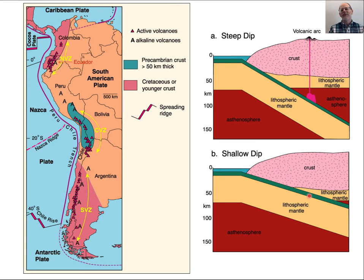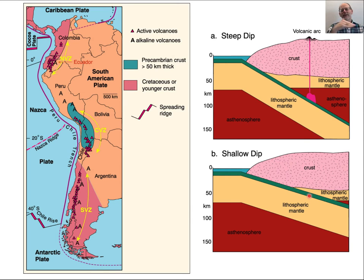In flat slab subduction, the slab comes down at a very shallow angle or skims along the bottom of the continental lithosphere, and when that happens we don't see a volcanic arc. It's only when there is a significant dip that we actually see magmas being produced at about 100 kilometers above the top of the subducting slab.